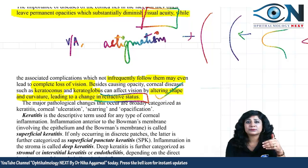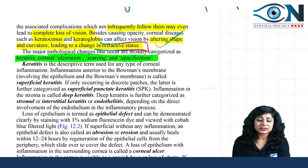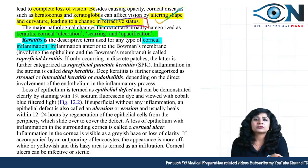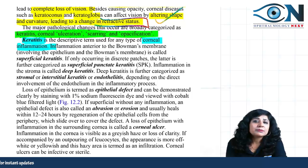The major pathological changes that occur are keratitis, corneal ulceration, scarring, and opacification. We will be focusing on these four things. Keratitis is simply any kind of inflammation — 'kerato' refers to the cornea and 'itis' means inflammation. Inflammation is a very common problem in the cornea that creates significant trouble.